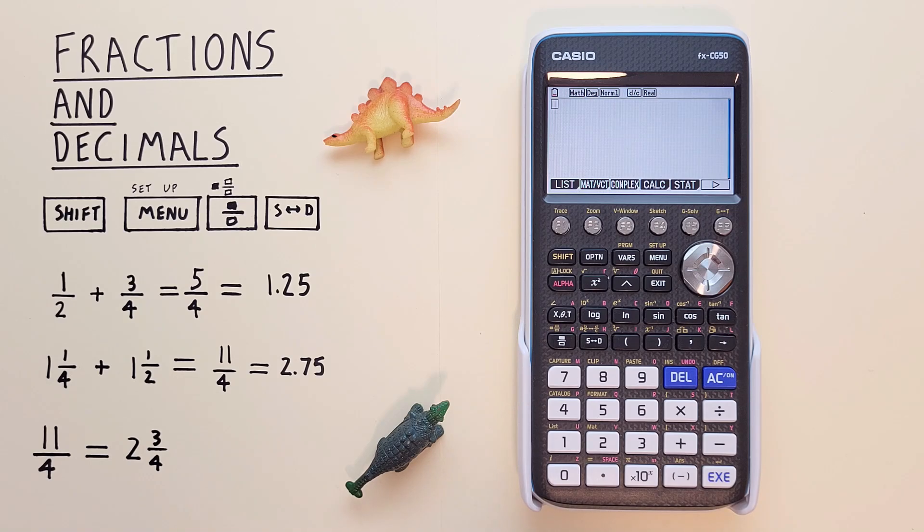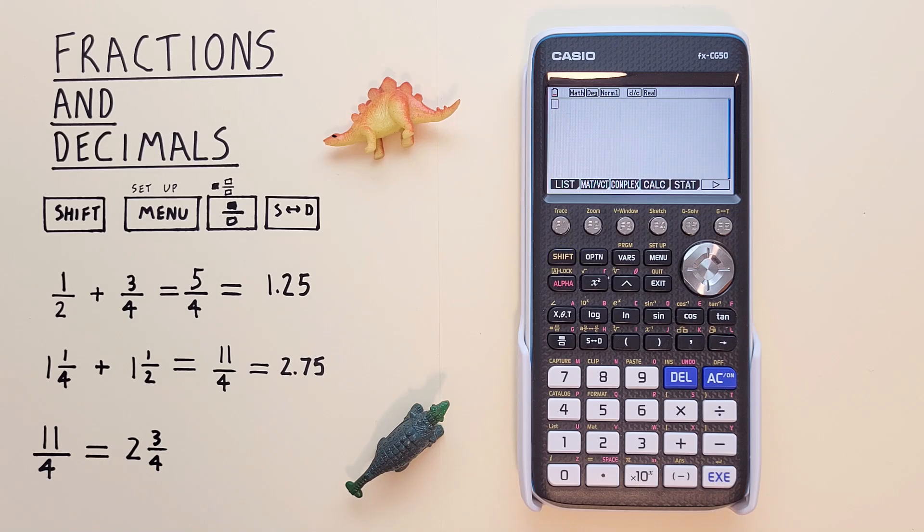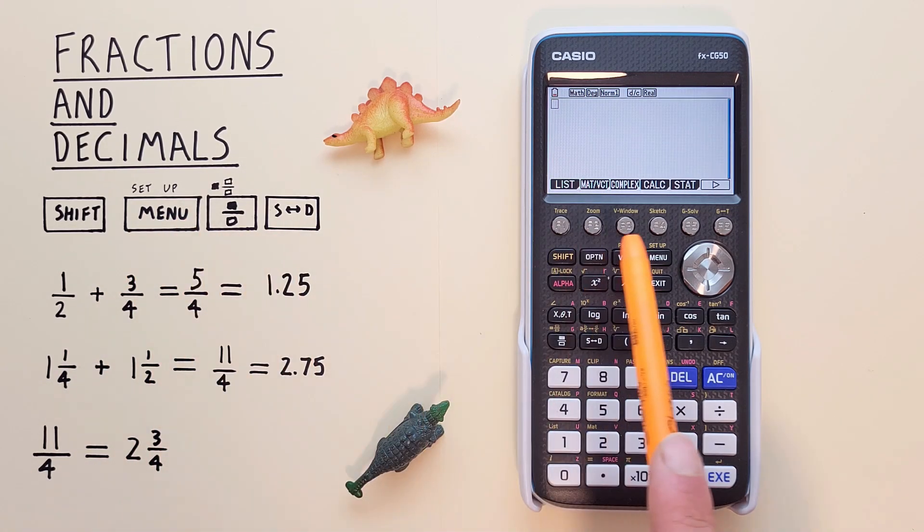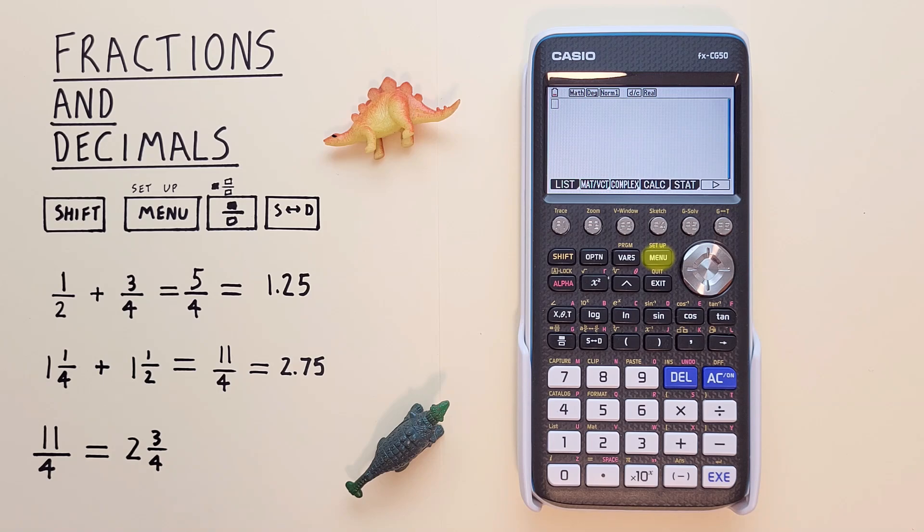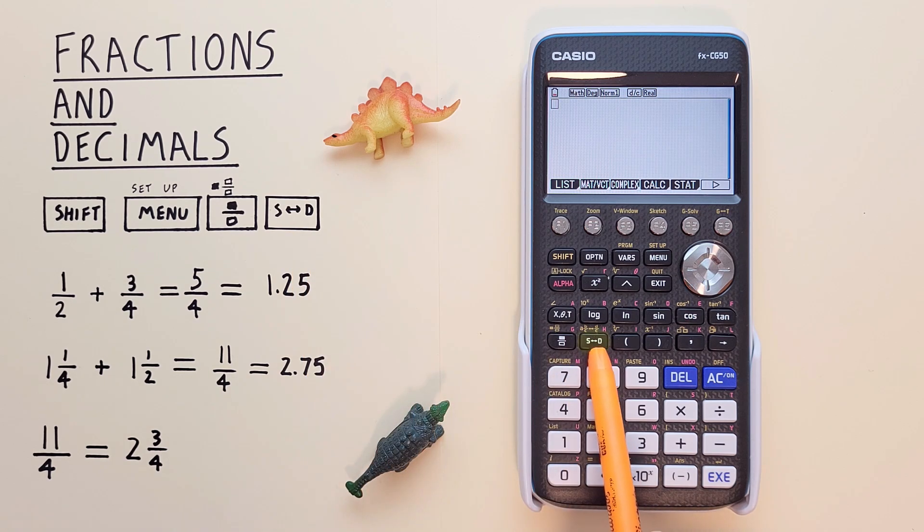To do this, we'll use the shift key that looks like this, located here. The menu setup key that looks like this, located here. The fraction key that looks like this, located here. And the STD or conversion key that looks like this, located here.